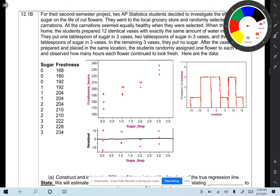the students prepared 12 identical vases with exactly the same amount of water in each vase. They put one tablespoon of sugar in three vases, two tablespoons of sugar in three vases, and three tablespoons of sugar in three vases. In the remaining three vases, they put no sugar.